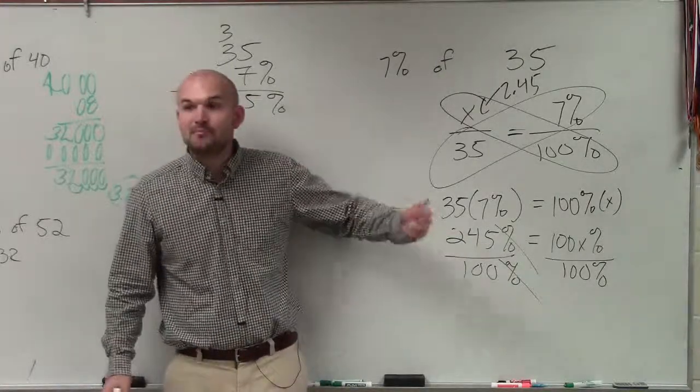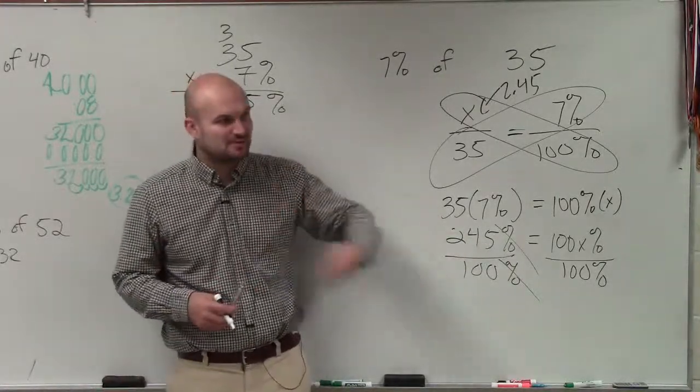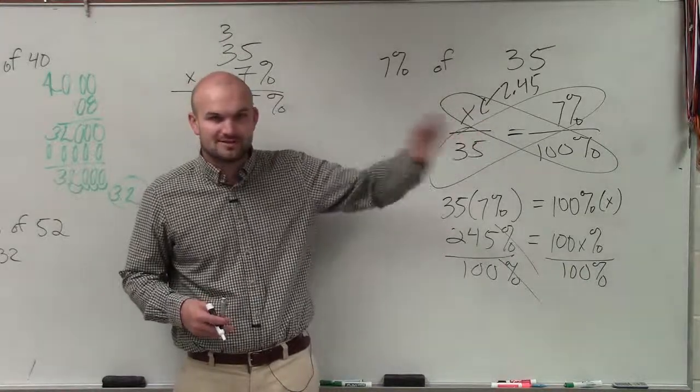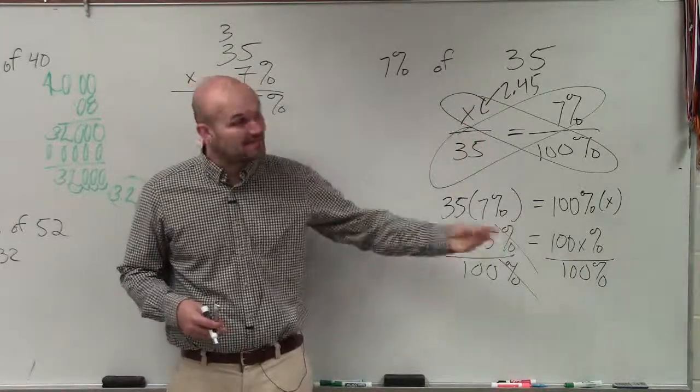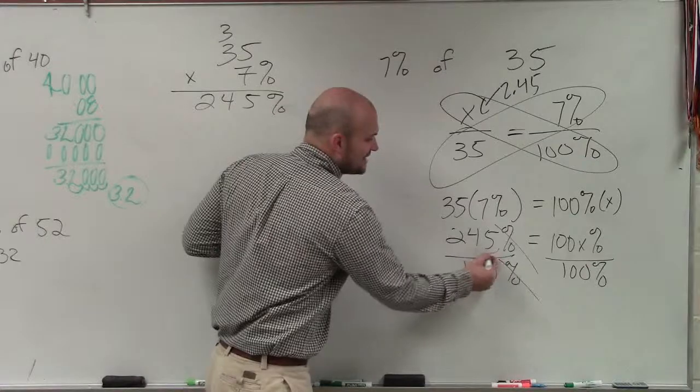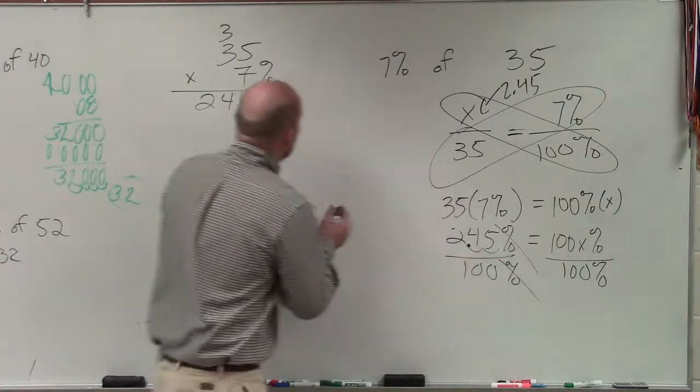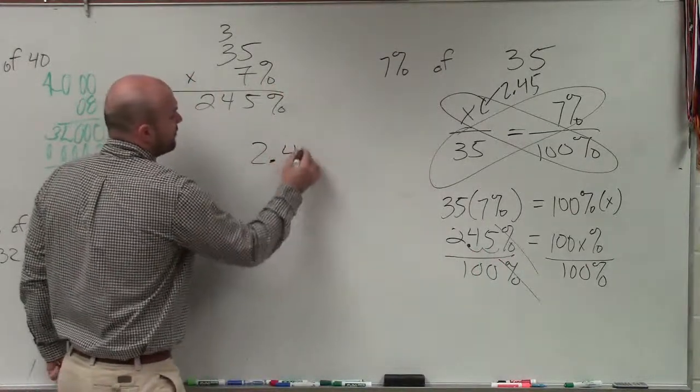And then to divide by 100, when we multiply by 100 from scientific notation, we move that decimal point over to the right. So if we're dividing by 100, I'm going to move this decimal point to the left, which gives me 2.45. Make sense?